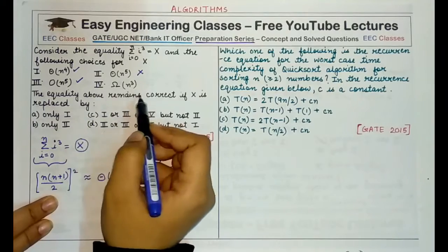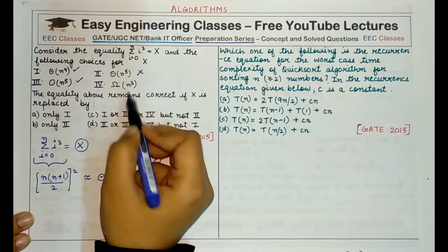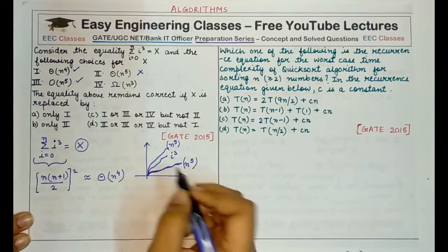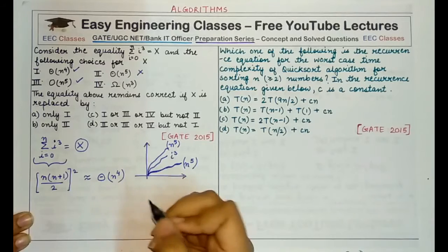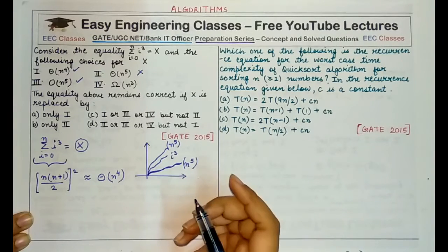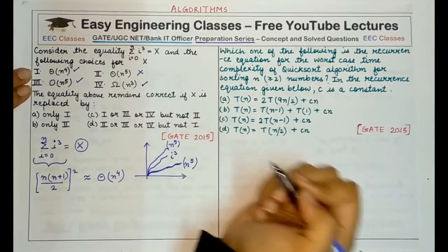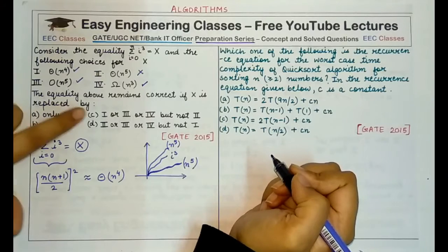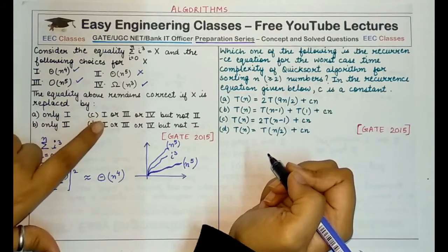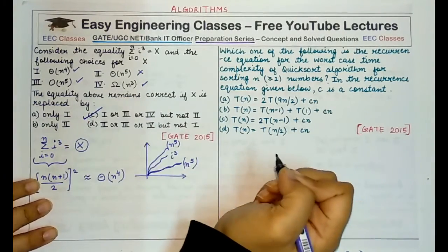Let's come to the fourth option omega of n raised to power 3. What does omega mean? Omega means a lower bound. So can we say that n raised to power 4 is lower bounded by n raised to power 3? Definitely. So this option is also correct and correspondingly which out of A, B, C, D would be correct? Only one, only two, these cannot be correct. One or three or four but not two. So the C option is correct.